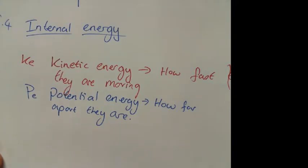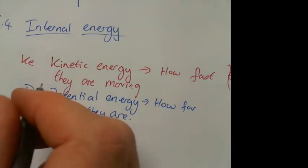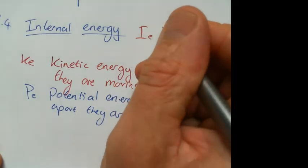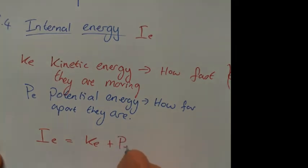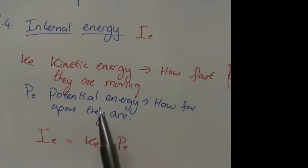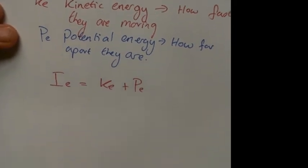So internal energy, which we'll call Ie. Ie equals Ke plus Pe. So the sum of the internal energy is the amount of energy they have from how quickly they're moving, and how much energy they have from how far apart they are. So let's relate that back to change of state that we were just doing previously.